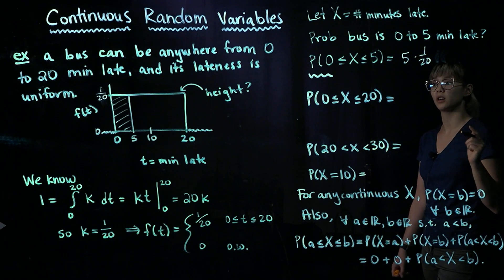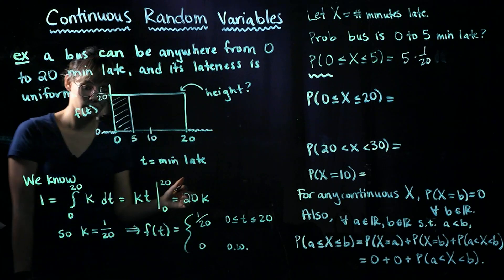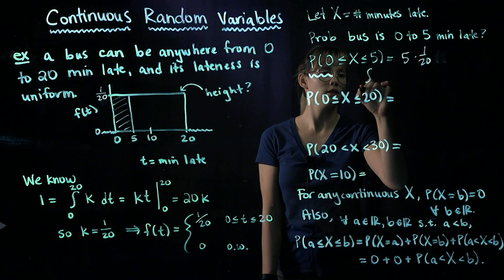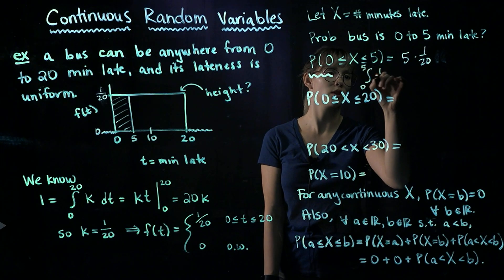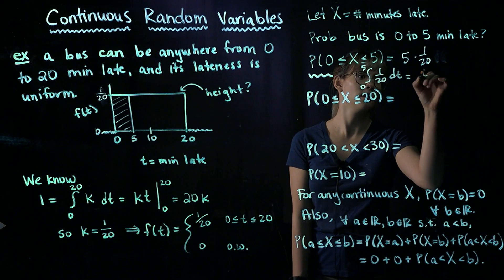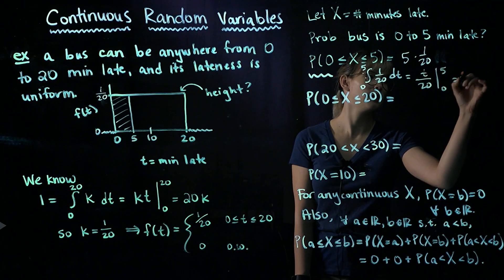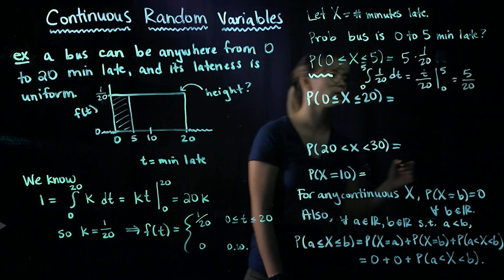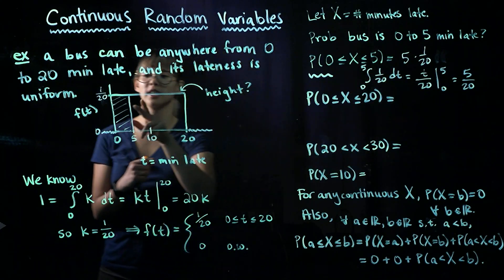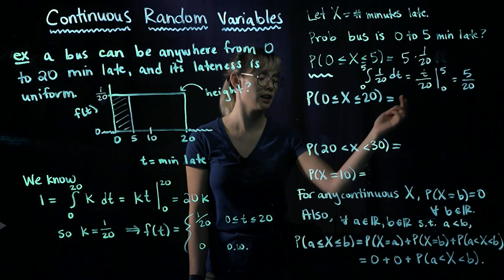So the probability that x is between 0 and 5 is just 5 times 1/20. We could also write this as an integral: the integral from 0 to 5 of (1/20) dt, giving t/20 evaluated from 0 to 5, which is 5/20 minus 0. Same answer whether we use the visual rectangle approach or an integral.